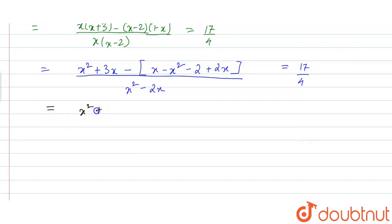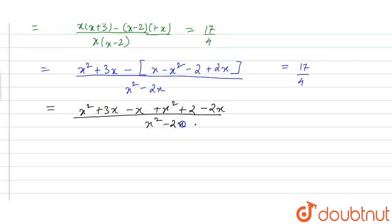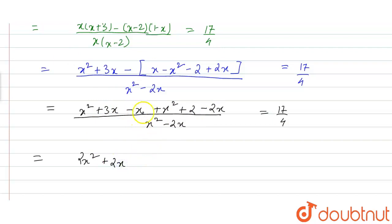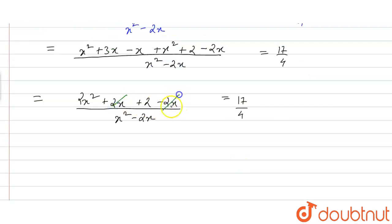Further simplifying, we have 2x² + 3x - x - 2x + 2x - 2 in the numerator, and x² - 2x in the denominator. The +2x and -2x cancel out, giving us (2x² + 2)/(x² - 2x) is equal to 17/4.